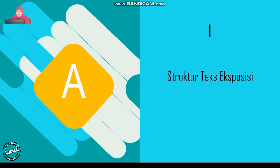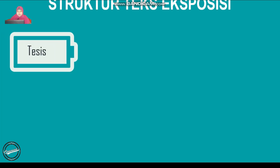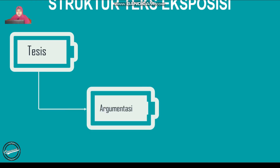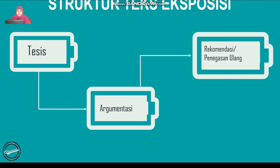Untuk pertama, kita akan membahas tentang struktur teks eksposisi. Apa yang dimaksud dengan struktur? Struktur itu harus berurutan. Kemudian dalam teks eksposisi, dia mengatur bagaimana urutan-urutan penyajian teks eksposisi. Untuk struktur teks eksposisi, yang pertama ada tesis, kemudian ada argumentasi, dan yang terakhir ada rekomendasi atau penegasan ulang.